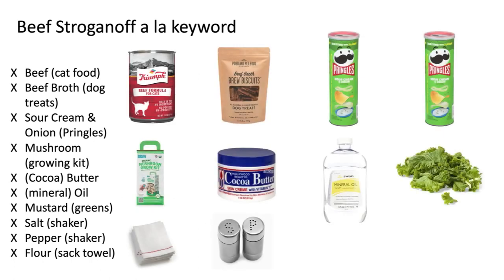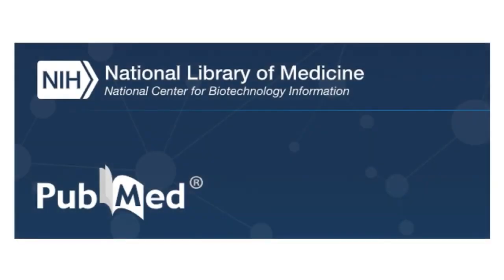You might be wondering that if subject searching is so much more precise, why would we use keywords at all? There are a number of reasons to run searches with both keywords and subject terms. One reason is that not all articles ever get subject terms attached to them. For example, in the National Library of Medicine's Medline database — which you may know as PubMed — there are about 35 million articles, and only around 30 million have subject terms. If you only search using subject terms, you would automatically be missing 5 million potentially relevant articles.